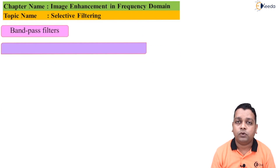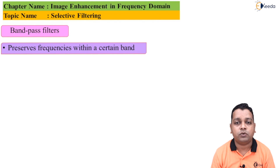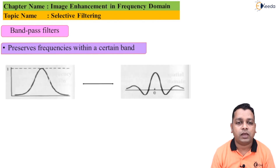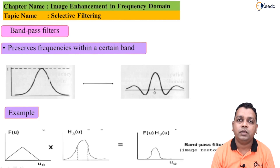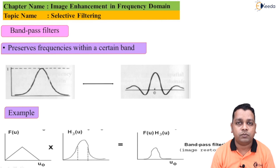After low pass and high pass filtering, we come to the first popular type of selective filtering: band pass filtering. Here we preserve frequency components within a certain specified band. The curvature in the spatial domain is shown on the left, and the corresponding frequency domain representation is on the right for the one-dimensional signal. The filtered output is represented as F(u)·H3(u), and image restoration is a key application made possible by band pass filters.